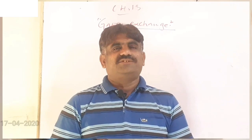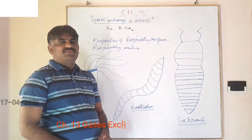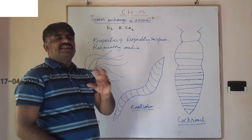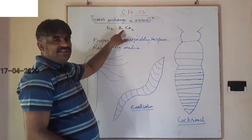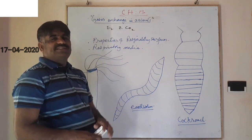Today we are discussing chapter number 13, whose name is Gases Exchange. We are taking the zoology part discussing gases exchange in animals. We should first know what gases are exchanged: one is oxygen and the other is carbon dioxide. They are exchanged through a process of diffusion.